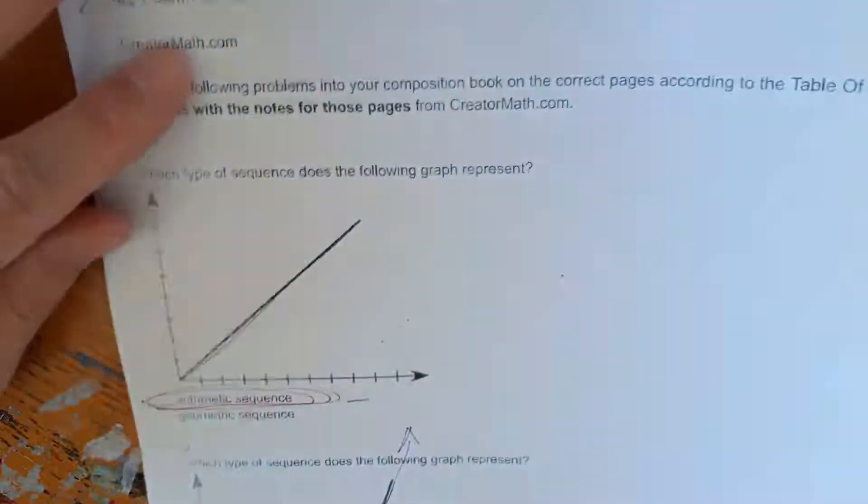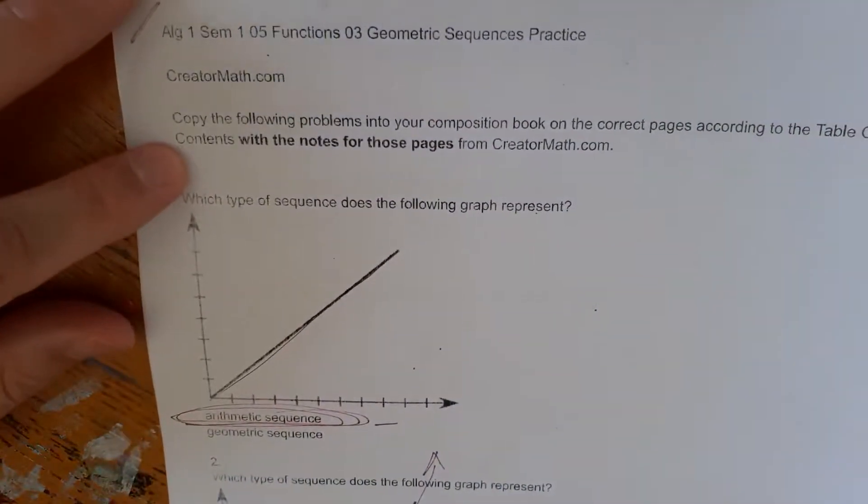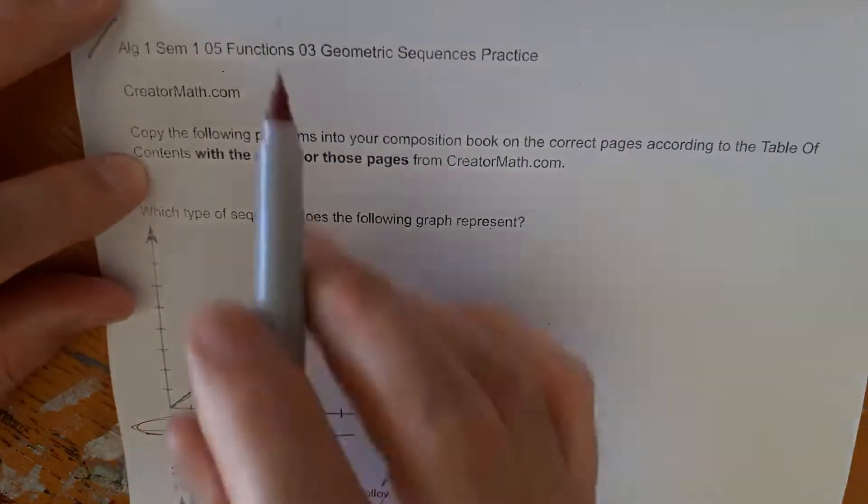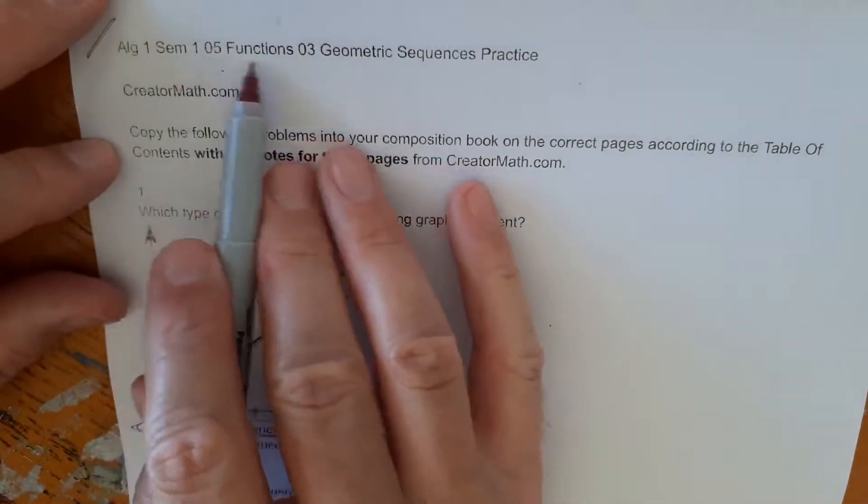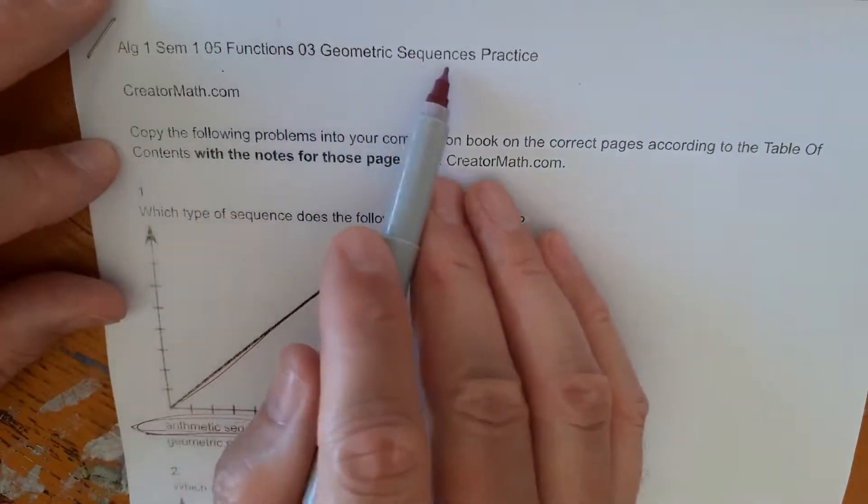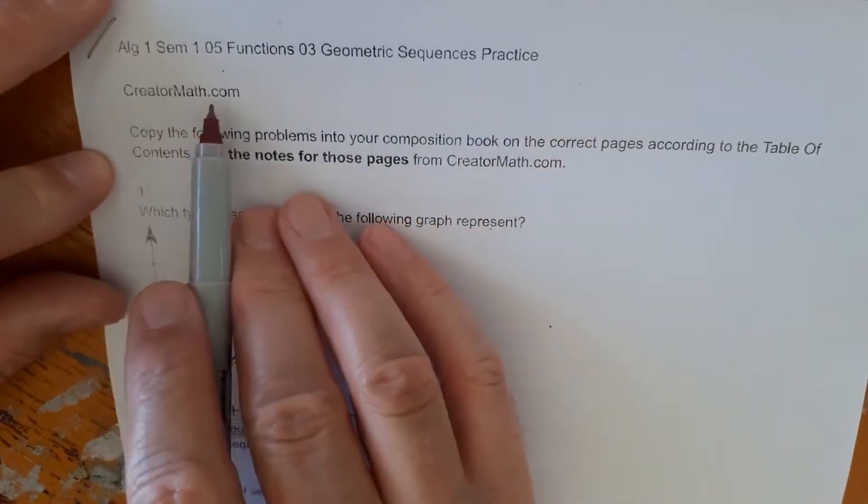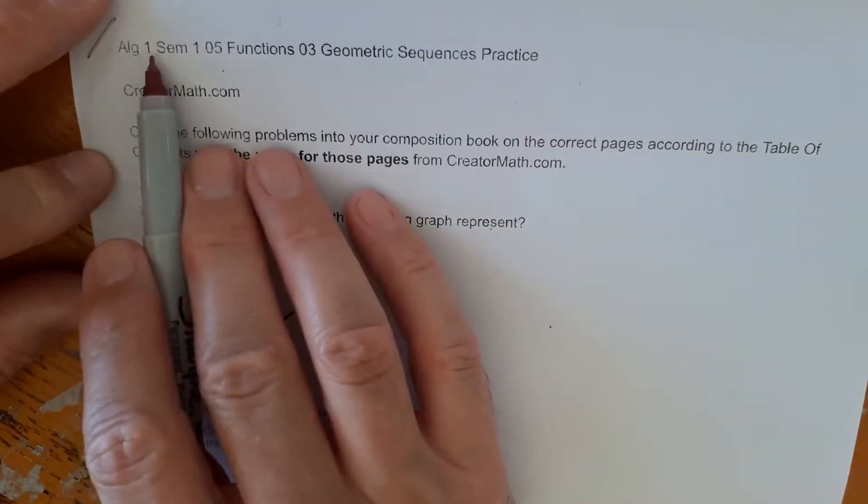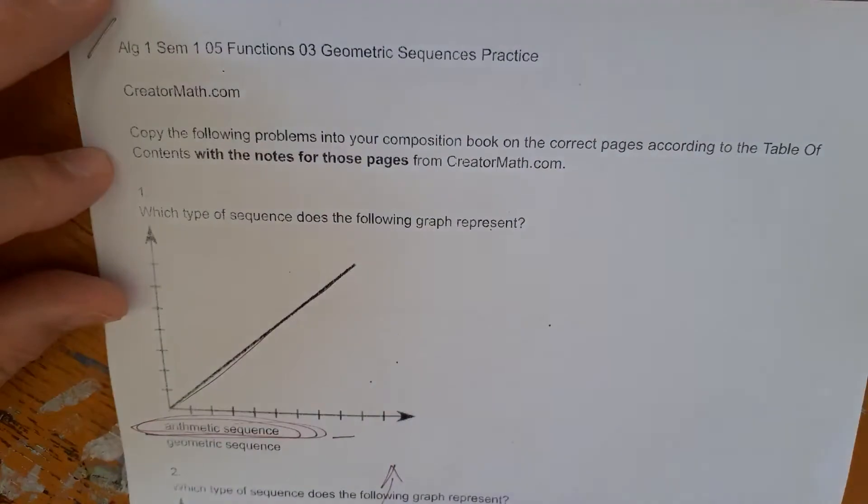Make sure you're matching up the name of the video with the problem set you're doing. Otherwise, it's not going to make much sense. In this case, this is Algebra 1, semester 1. A fifth unit called Functions and the third lesson called Geometric Sequences Practice. It's on creatormath.com under the Algebra 1 tab. Hope this helps.